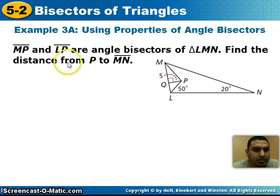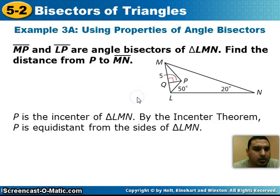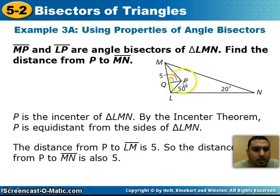Let's look at this example. Segments MP and LP are angle bisectors of triangle LMN, and we want to find the distance from P to segment MN. Using our theorem, P is the incenter of the triangle. The distance from P to LM is 5, which means the distance from P to segment MN is also 5.